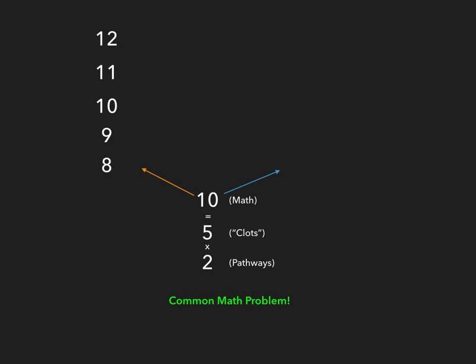However, the number 10 was already used — in the common math problem we said two pathways times five letters in the word 'clots' equals 10. So because we already used the number 10, counting down from 12 we have to cross out the number 10. Now, what number is left over if we continue counting down from 8? Well, 7. We've already reached the arrow, so we throw the 7 on the other side — on the blue pathway.